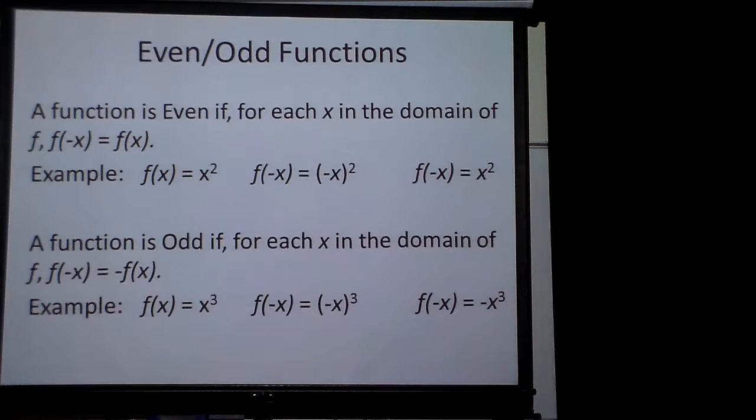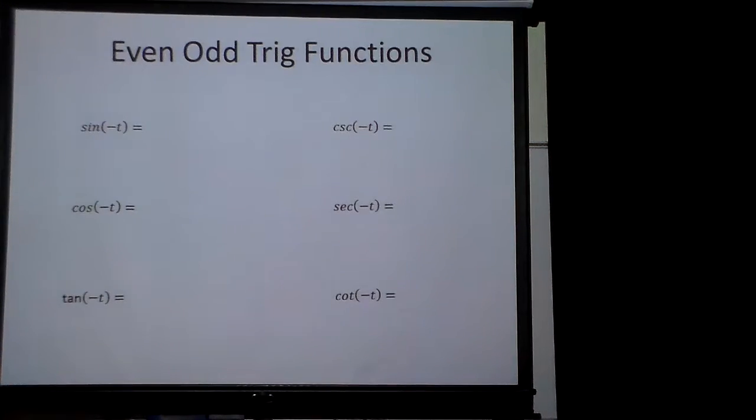Those are the definitions for even and odd functions. So here's what's true about trig with even and odd. Sine of negative t is going to make the whole thing negative. And when we graph these, you'll start to see why a little more. When you look at a sine graph, it's considered to be odd.